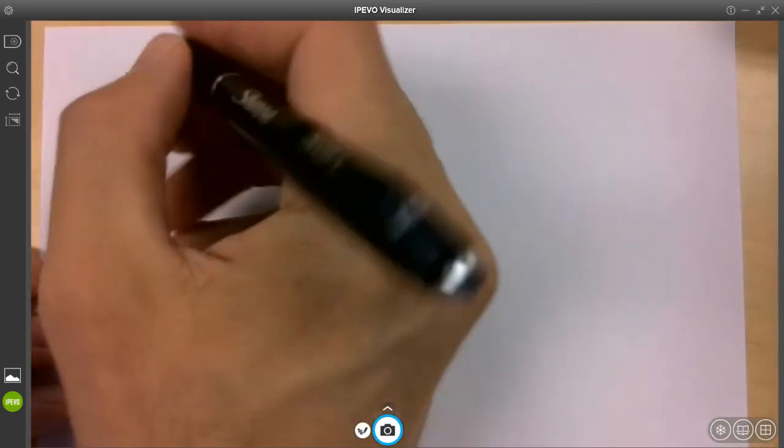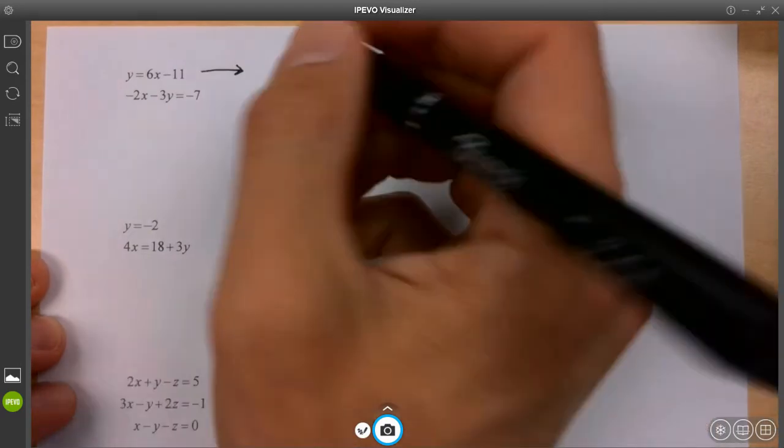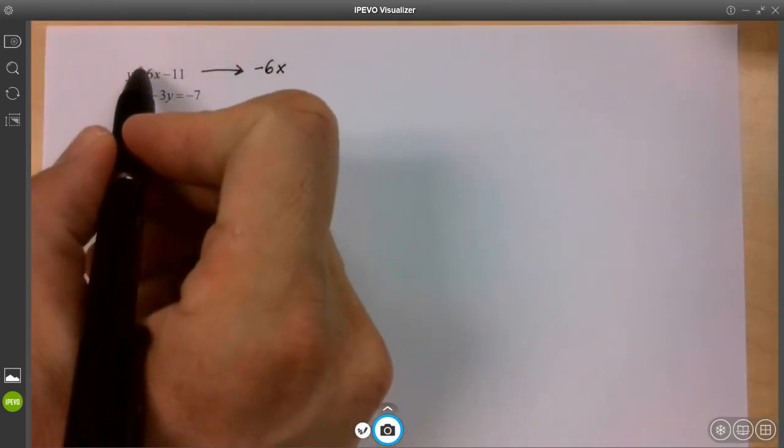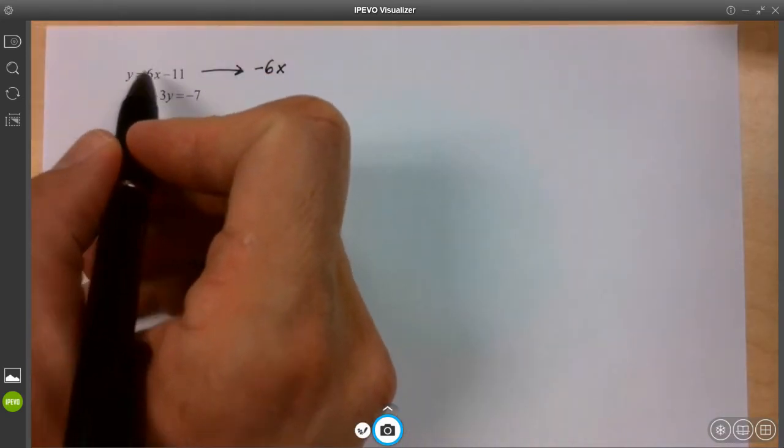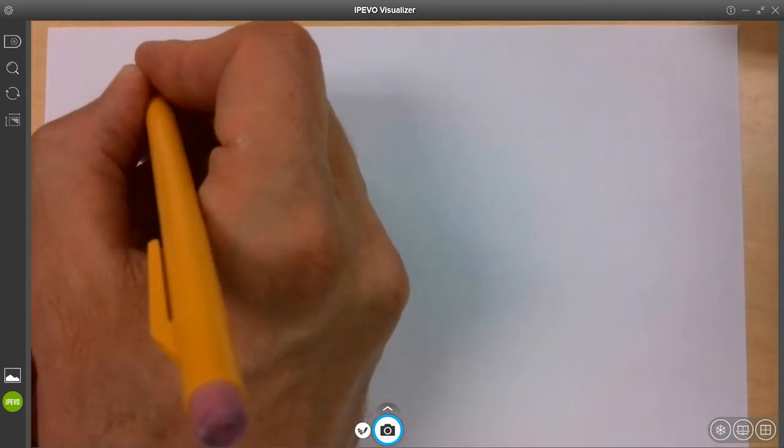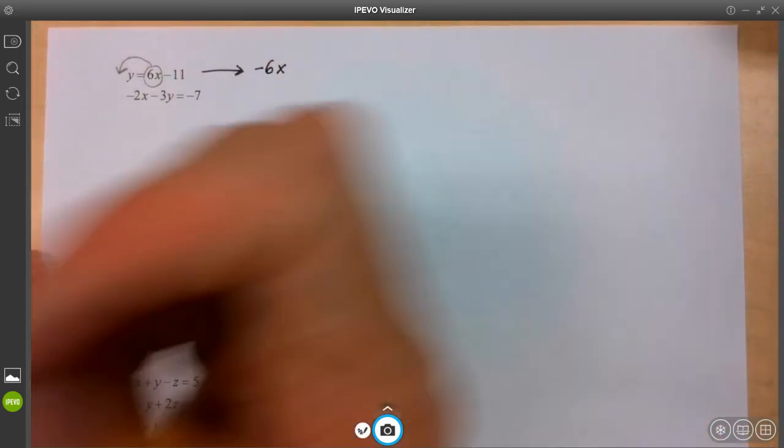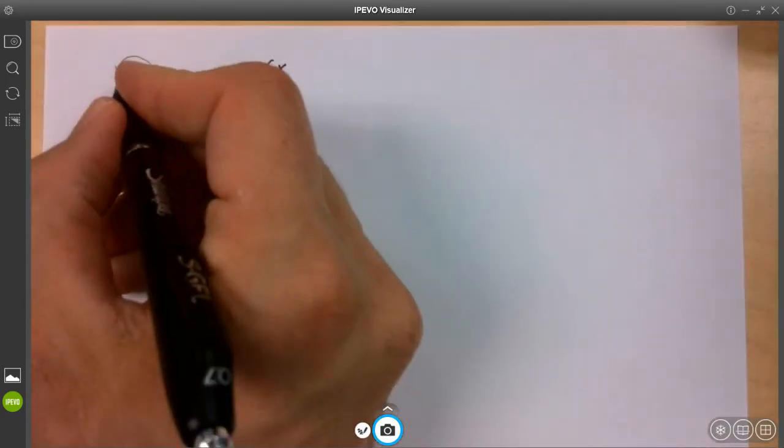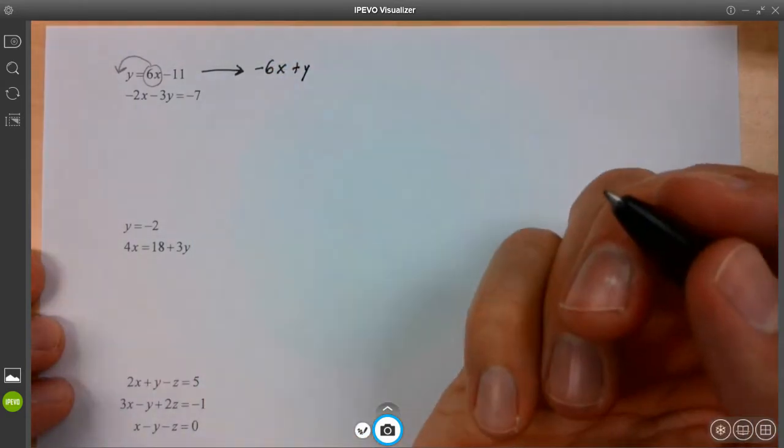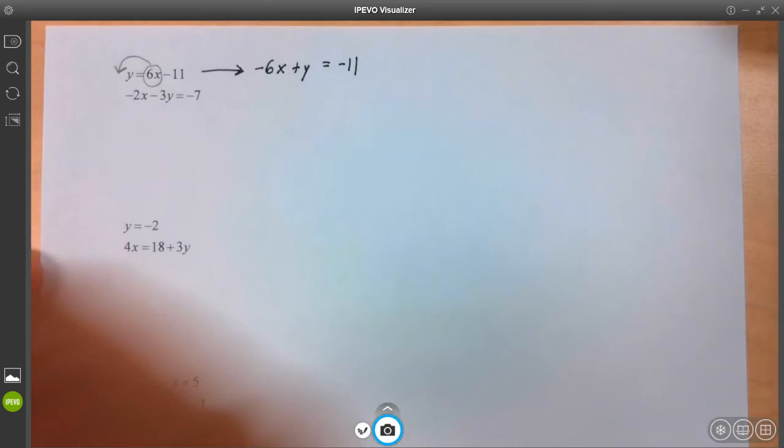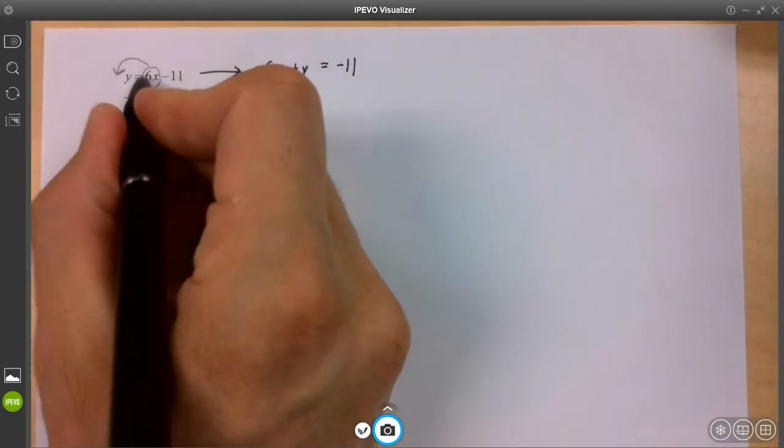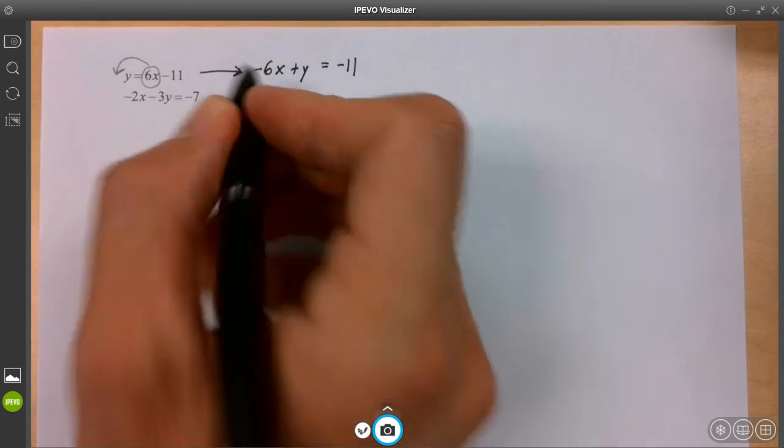So what we should do is take this top equation and go negative six X. I want it to say X, Y equals a number. And this is on the wrong side. So technically, I'm taking this six X and I'm moving it out front. And when I move it to the other side of the equal sign, it changes signs. So negative six X, and this was a positive one Y already, it was plus Y.